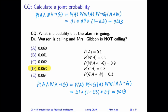So we want to calculate the probability of A and W and not G. Now if you remember the chain rule,